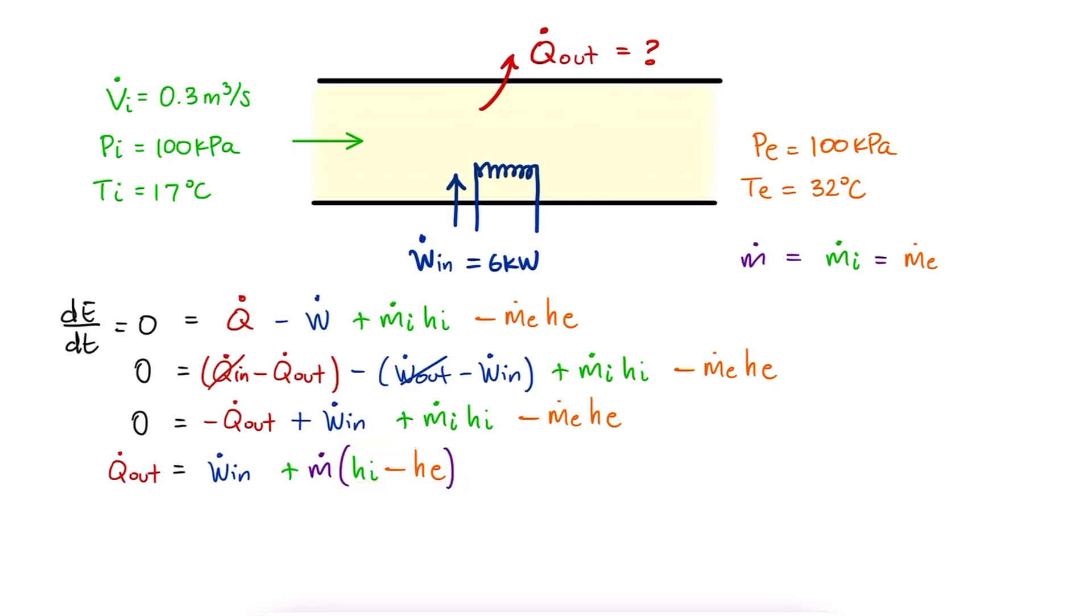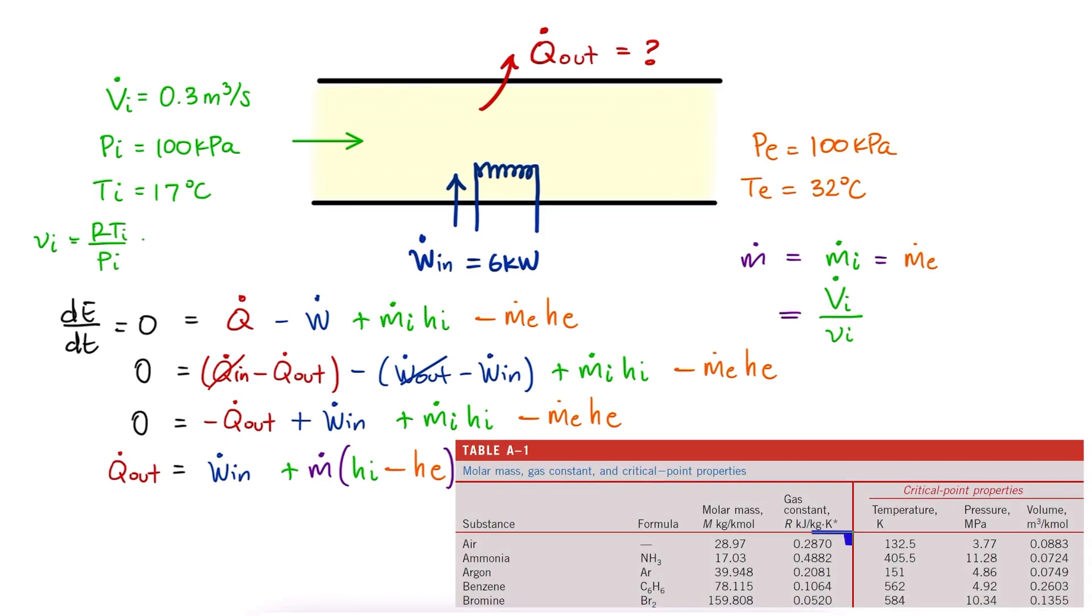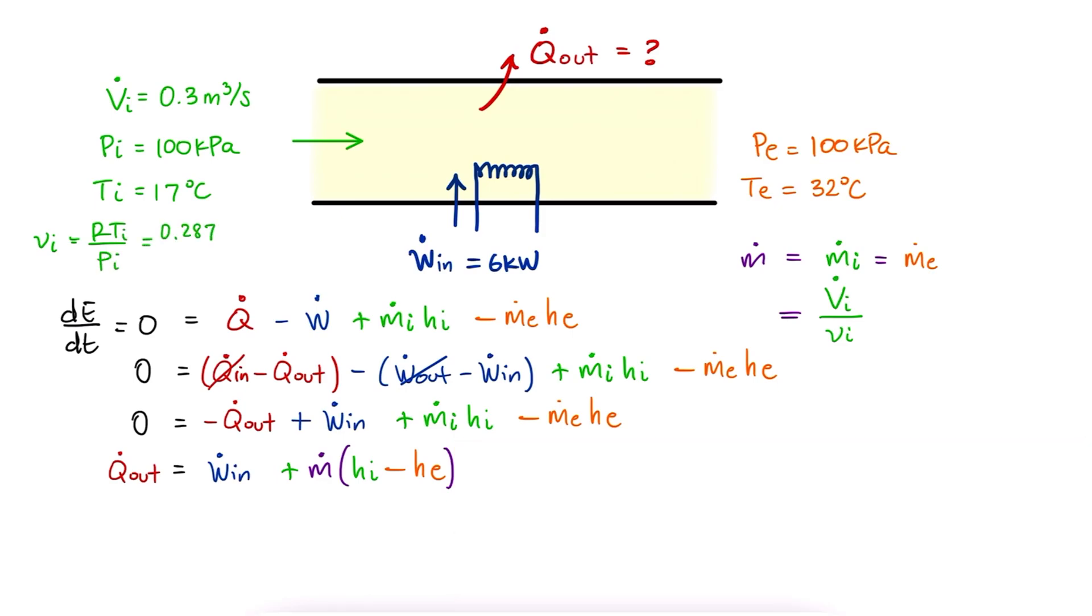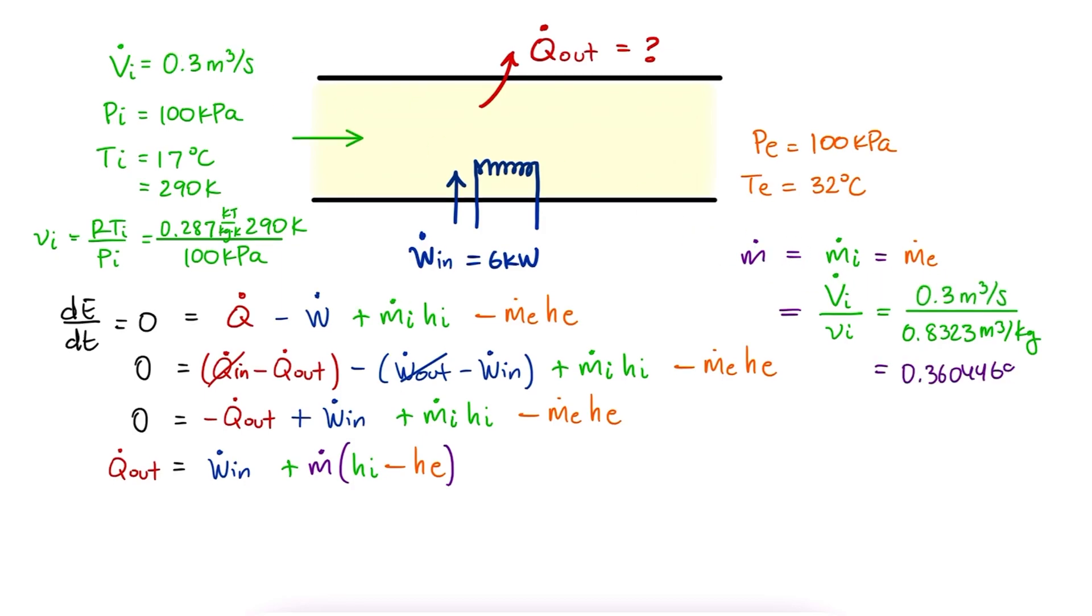For the mass flow rate, we already have the volumetric flow rate, but we're missing the specific volume. We use the ideal gas equation to solve for the specific volume at the inlet. We look up the gas constant for air. We substitute the pressure and the temperature in Kelvin to find the specific volume. And with it and the volumetric flow rate, we find the mass flow rate.